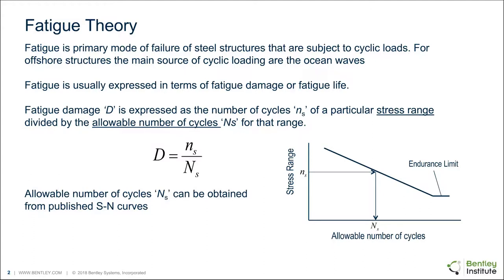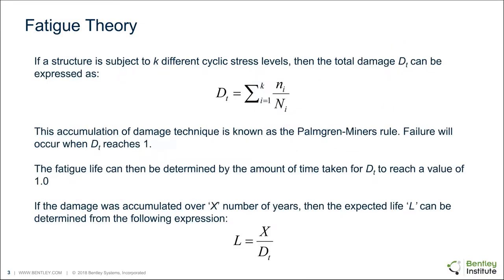Damage can be expressed as the number of cycles that the connection experiences versus the allowable number of cycles. In something known as Palmgren-Miner's Rule, you can combine different stress ranges with the following equation, where you sum the number of cycles over the allowable number of cycles, and that equals the total damage for the connection. Conversely, you can also describe this as an expected life by dividing the number of years by the damage.